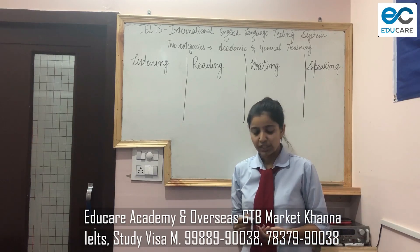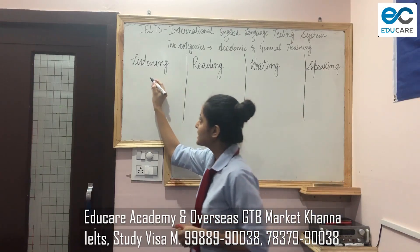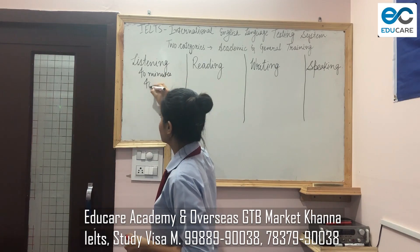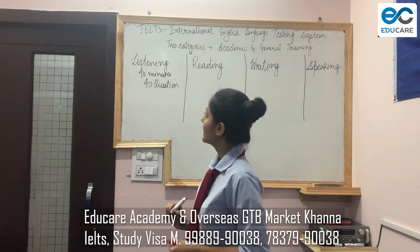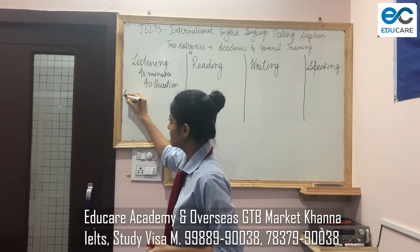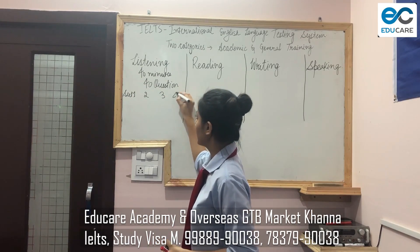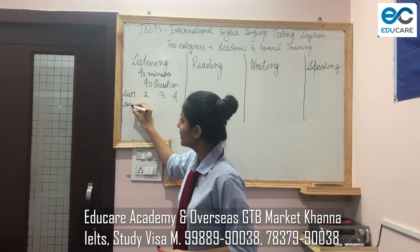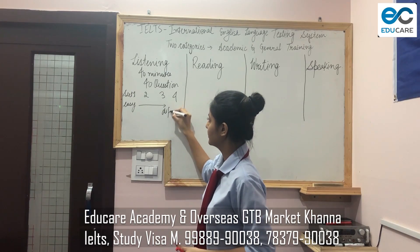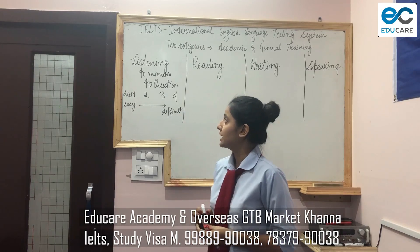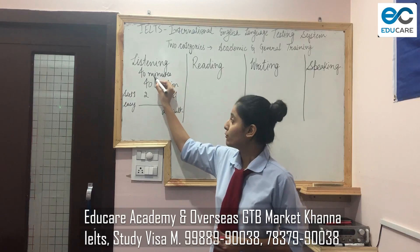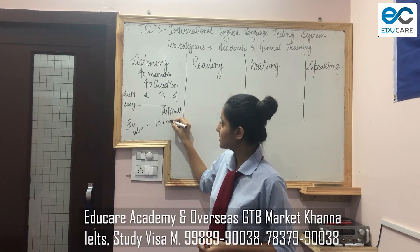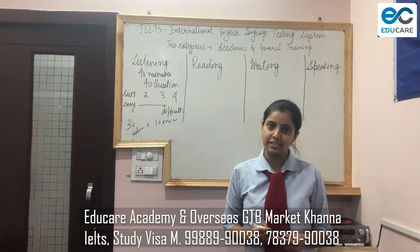Now let's move to the Listening module. Listening is 40 minutes long and has 40 questions. It has four sections — Section 1, 2, 3, and 4 — where Section 1 is the easiest and difficulty increases progressively. Of the 40 minutes, 30 minutes are given to solve the questions and 10 minutes to transfer your answers to the answer sheet.